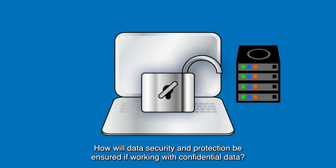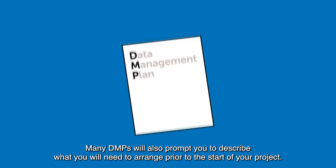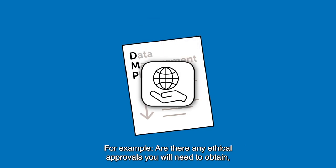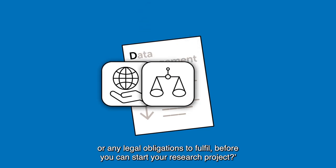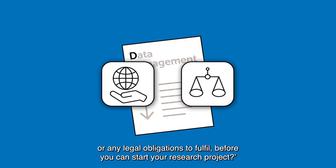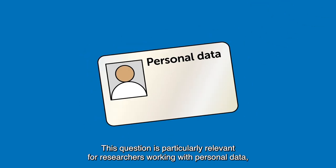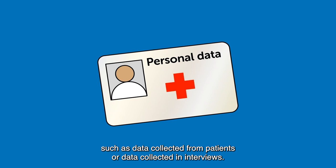How will data security and protection be ensured if working with confidential data? Many DMPs will also prompt you to describe what you will need to arrange prior to the start of your project — for example, any ethical approvals you will need to obtain or legal obligations to fulfill. This is particularly relevant for researchers working with personal data, such as data collected from patients or in interviews.